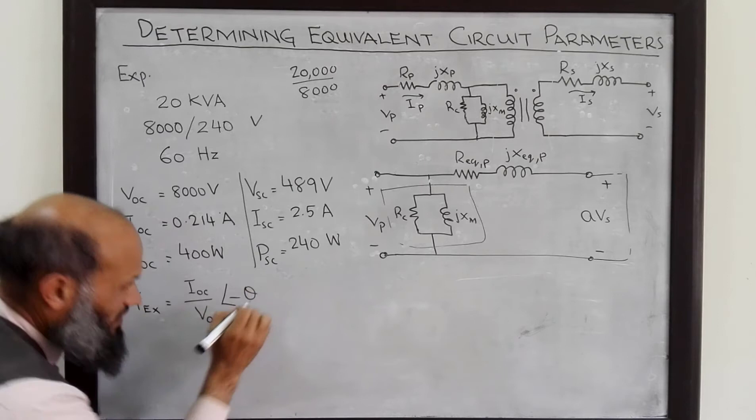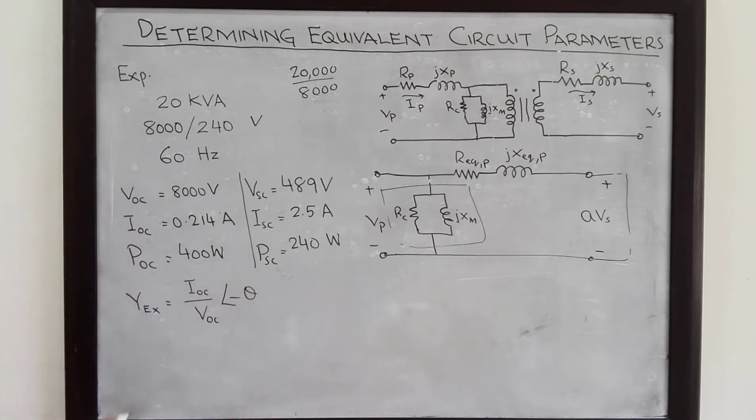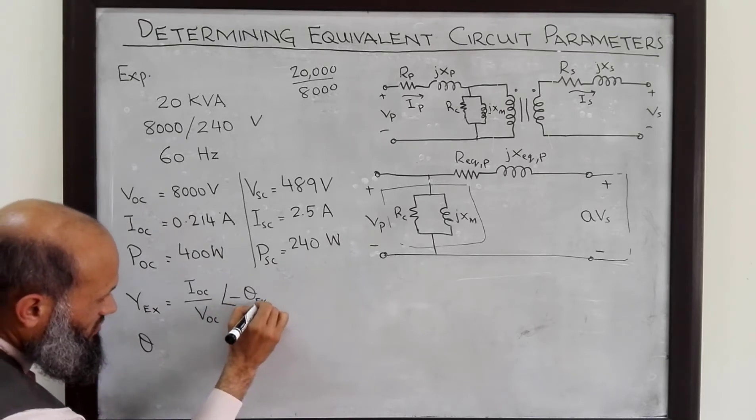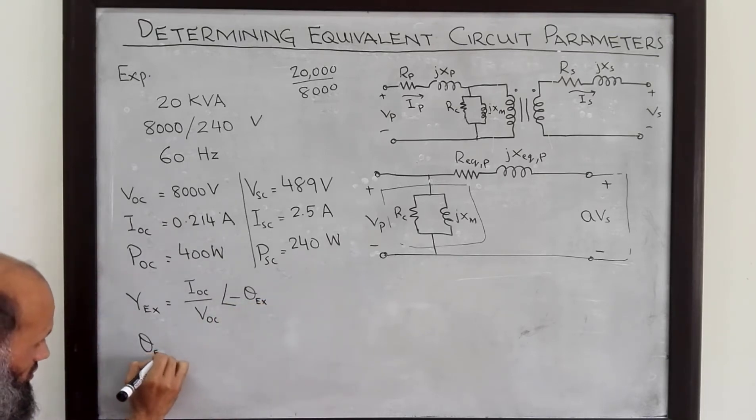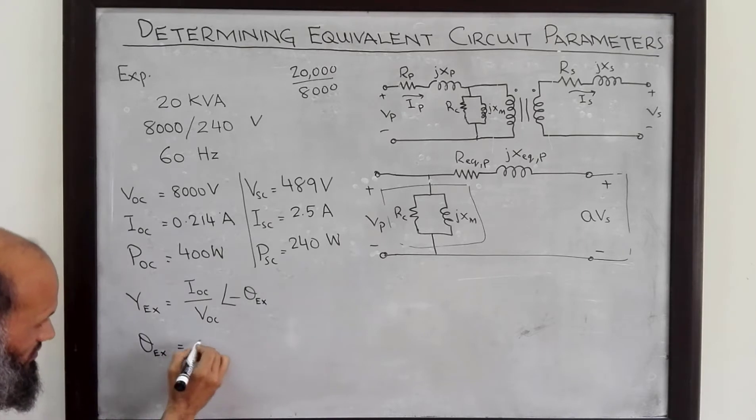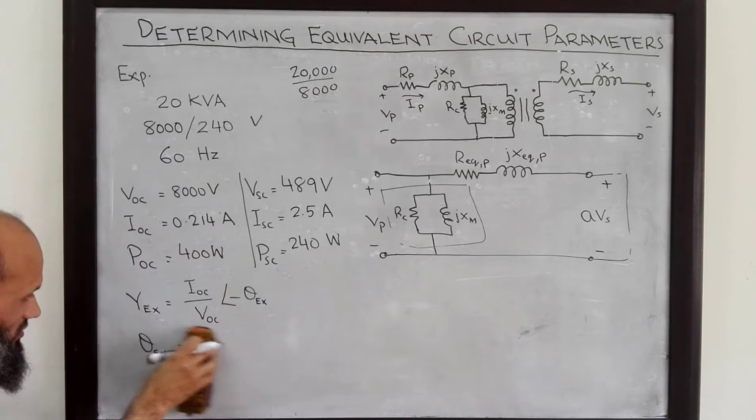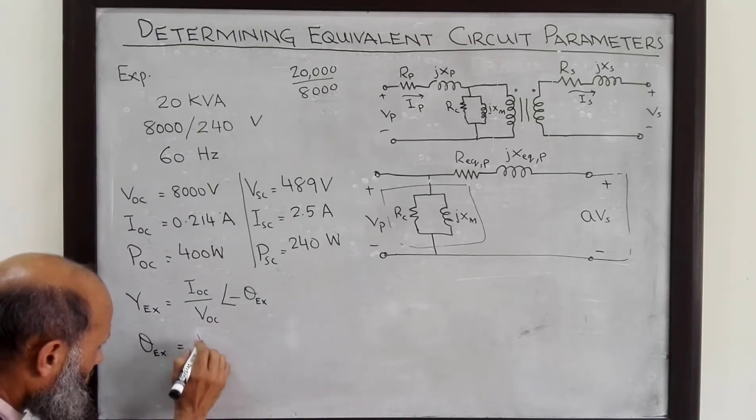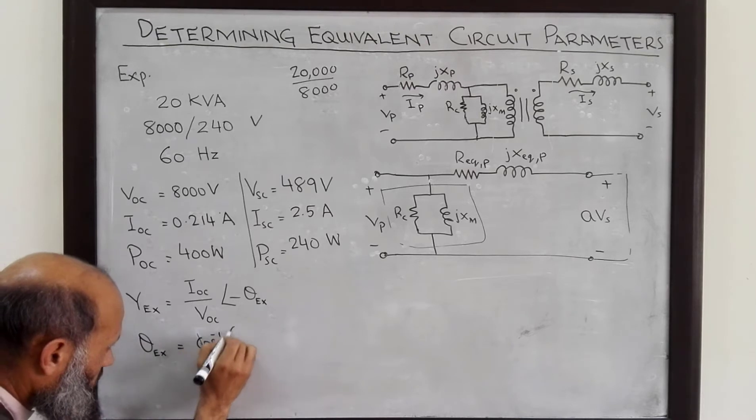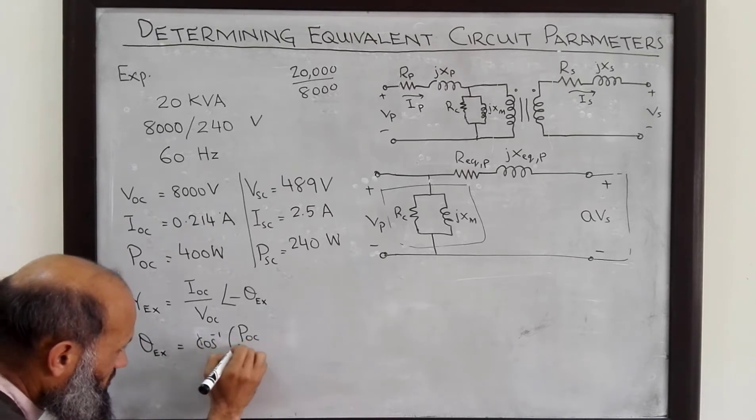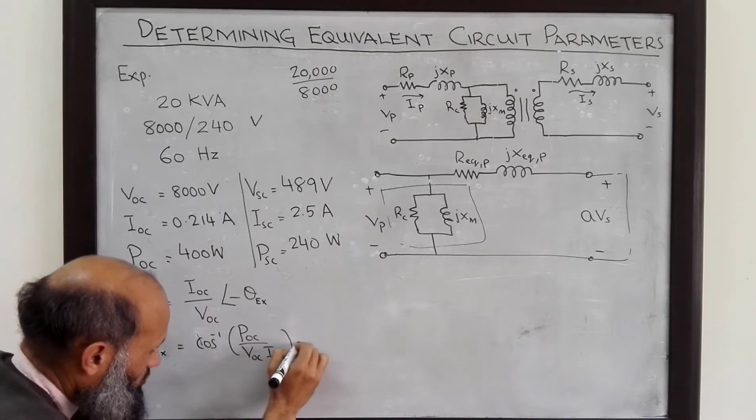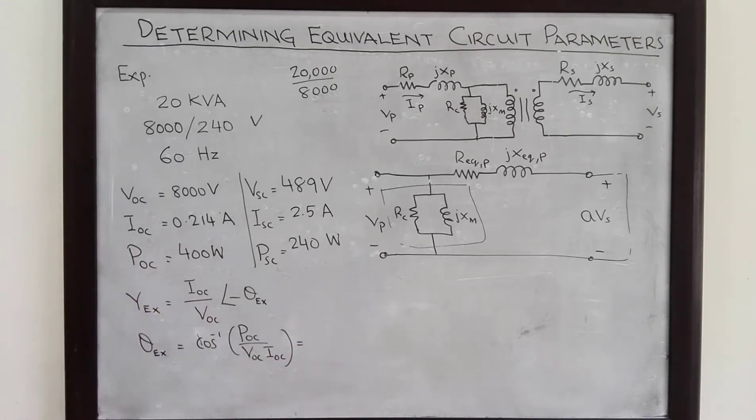And angle is minus theta. Where theta, if we can call it theta of the excitation branch, theta excitation is equal to cosine inverse of P open circuit divided by V open circuit times I open circuit.